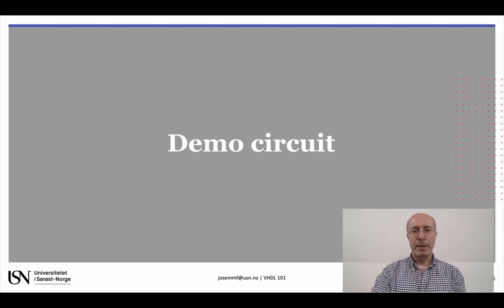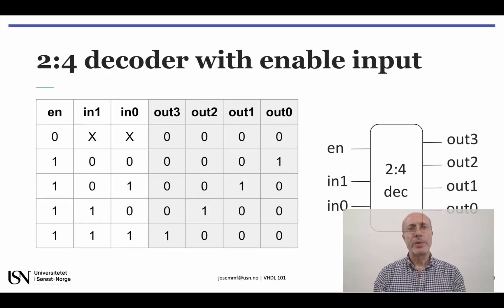Let's start with the demonstration circuit. We will consider a simple 2-to-4 decoder with an enable input and active high outputs. Only one output at each time will be active according to the logic combination at inputs in1 and in0, except when the enable input is 0, in which case all outputs must be low.